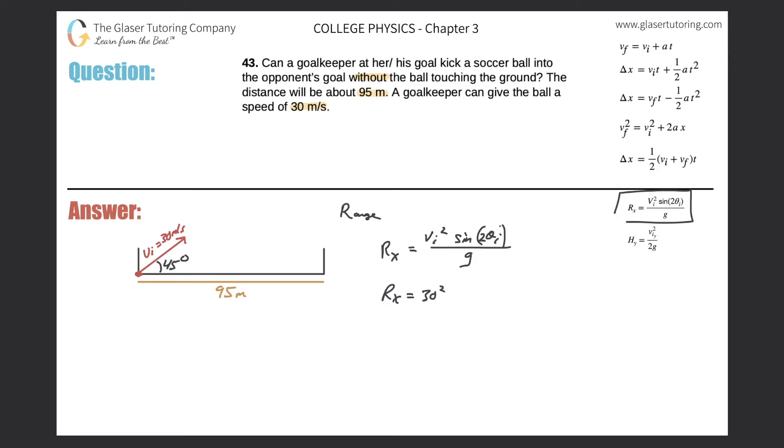It's going to be equal to 30 squared times the sine of two times 45 all over 9.80. And you can even think about this right: what's two times 45? That's 90. What's the sine of 90? One. Anything less than that, anything other than 90 in terms of the sine will be less than one. Think about the sine function, it reaches a maximum of one.